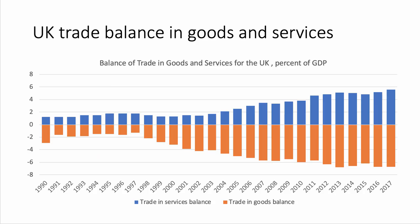Some countries have large trade surpluses; for the UK, there is a net trade deficit. We're measuring trade balances as a share of GDP. The trade balance in services for the UK has been rising over the long term, whereas the trade balance in goods has been worsening — the deficit has been increasing — giving the UK an overall trade deficit.